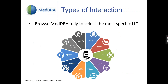MedRA has terms for several types of drug interactions: a combination of a drug with another drug or a herbal substance — which we have in this scenario — an interaction with food or alcohol, tobacco, other illicit drugs, radiation, medical devices, diseases, and even the genetic makeup of a person. These are the types of interaction terms to be aware of when looking to code.